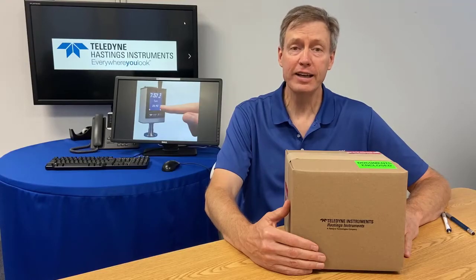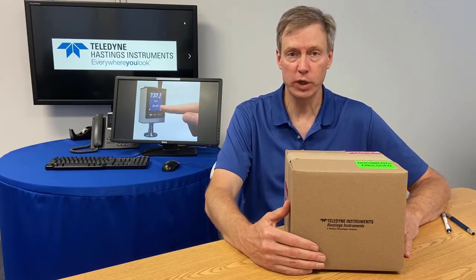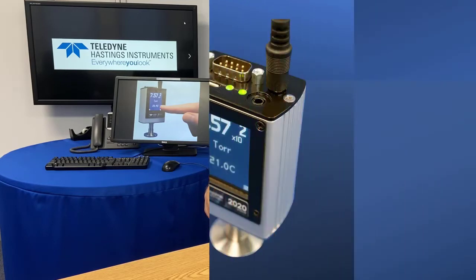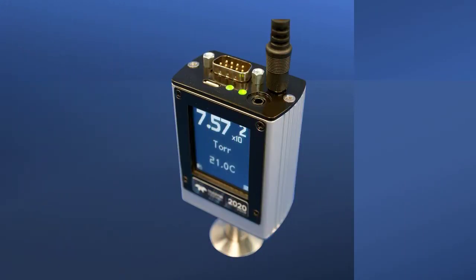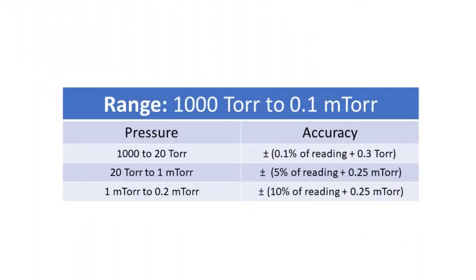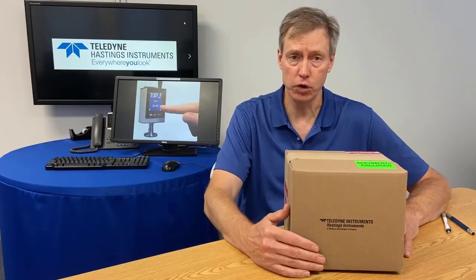And to get started, I'd like to briefly describe the HVG-2020B. The HVG-2020B is a dual-sensor vacuum gauge that measures from just above atmospheric pressure down to 0.1 millitorr. Two sensors are used.